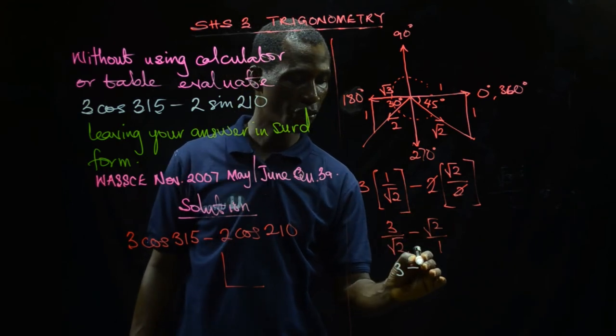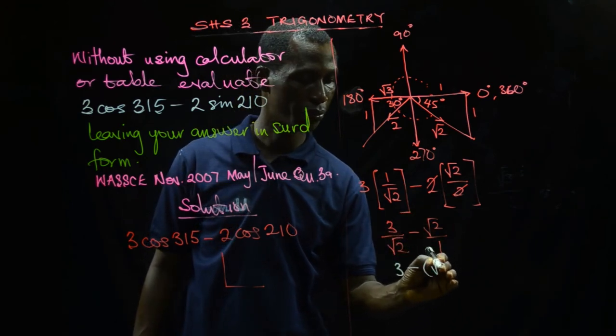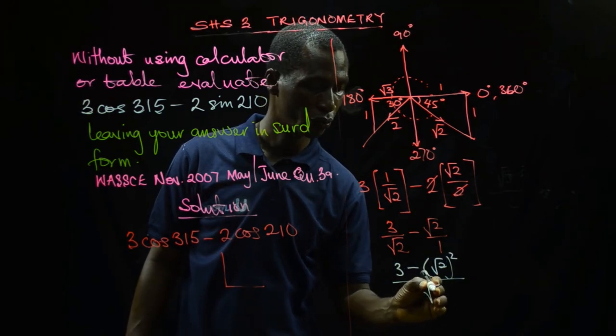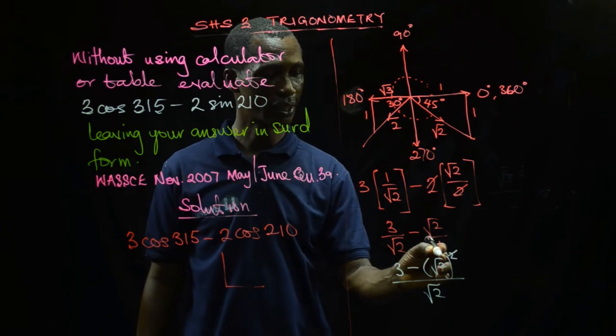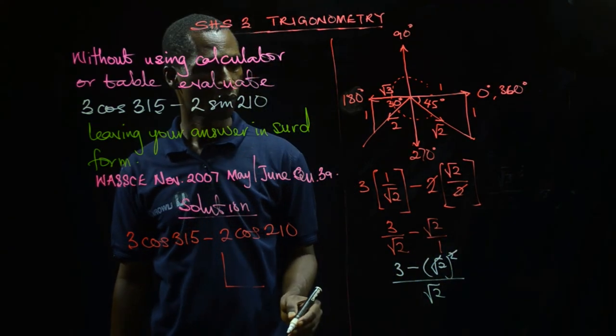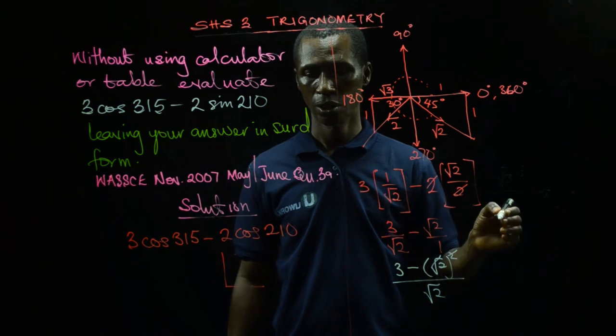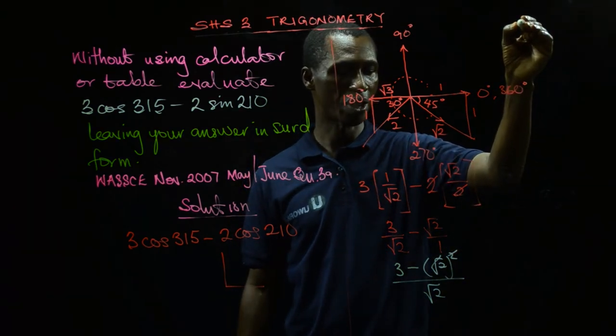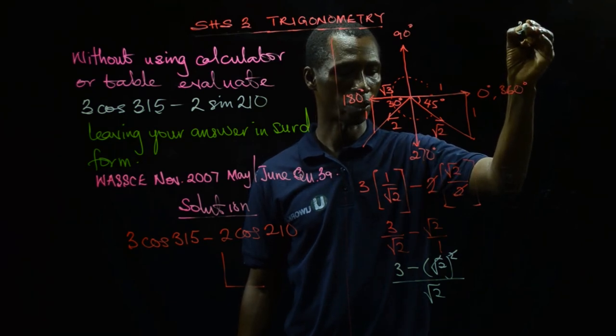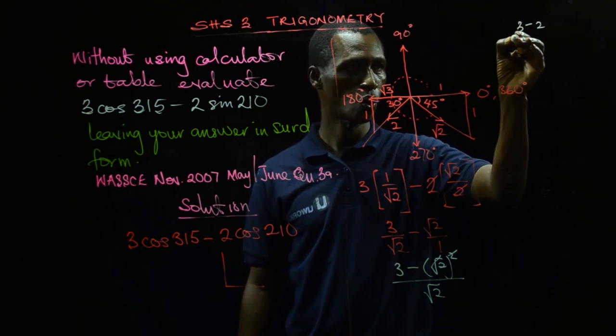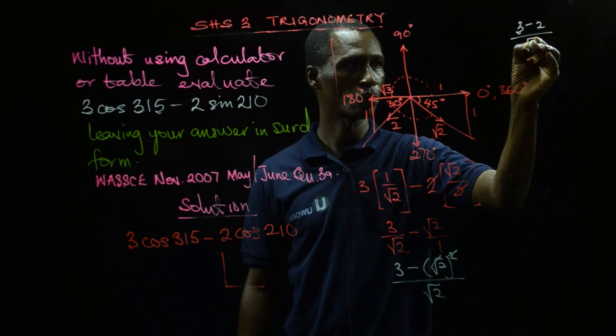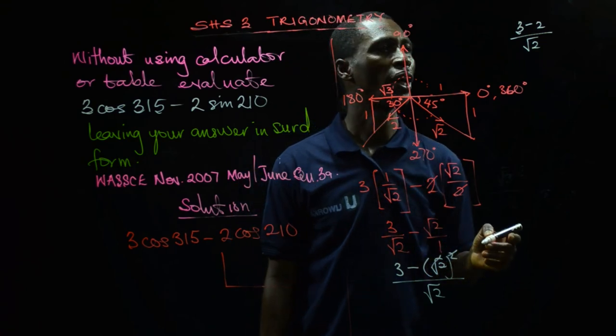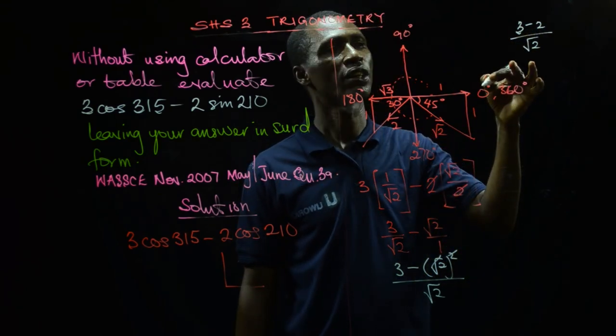√2 times √2 will give me minus (√2)². All over √2. The 2 cancels. It's going to give me (3 - 2) over √2.